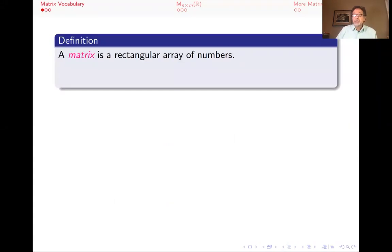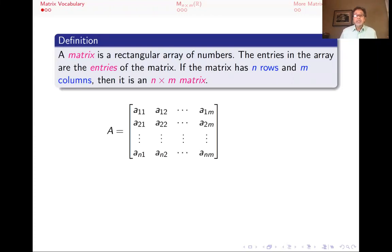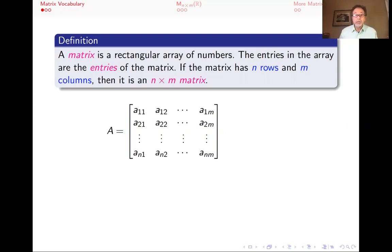A matrix is a rectangular array of numbers, and the entries in that array are called the entries of the matrix. If the matrix has n rows and m columns, then we say that it's an n by m matrix. Here is a matrix with entries denoted A11, A12, A1m, and so forth. It has n rows and m columns, so it's an n by m matrix.